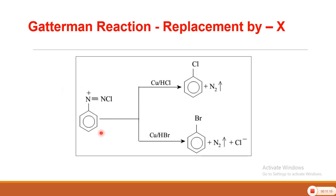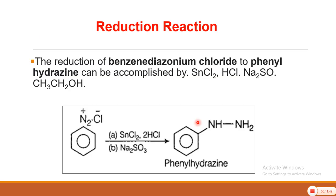In the Sandmeyer reaction the catalysts were CuCl, CuBr, and CuCN (copper salts), whereas in the Gatterman reaction we use copper powder — that is the only difference. Benzene Diazonium Chloride treated with copper powder and HCl gives replacement by Cl; with copper powder and HBr gives replacement by bromine. Both Sandmeyer and Gatterman reactions are replacement reactions replacing the diazonium group by chlorine, bromine, or cyanide. In Gatterman reaction we commonly use it for chlorine and bromine.